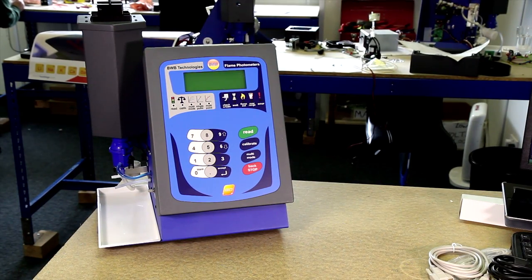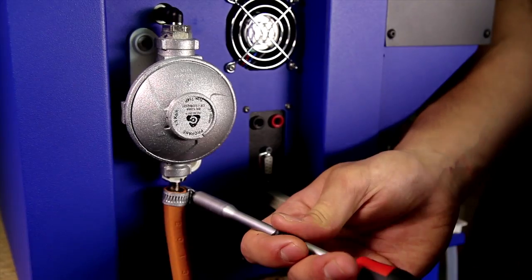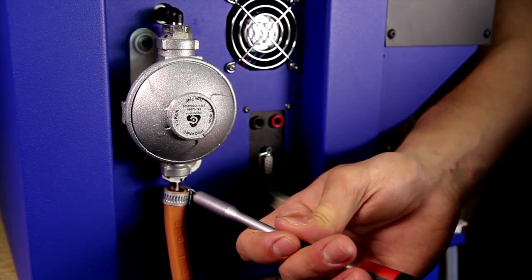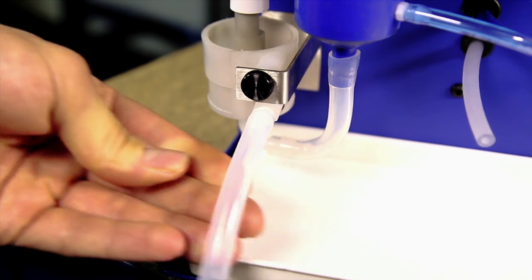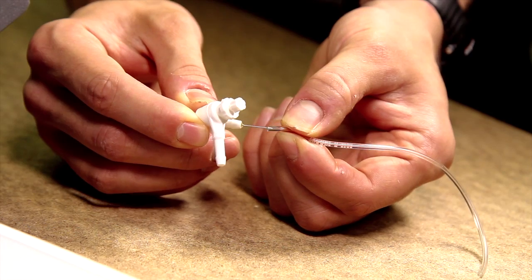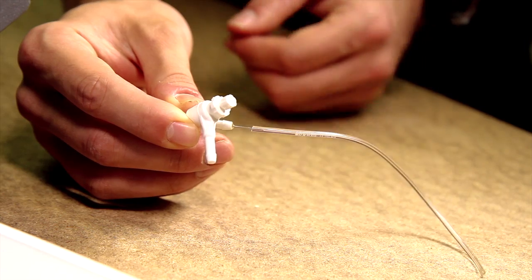Setting up the BWB bio takes only a few minutes. First, connect the gas tubing to the regulator. Now connect the waste tubing to the drain cup and run it to a drain. Attach the aspiration tube to the nebulizer.